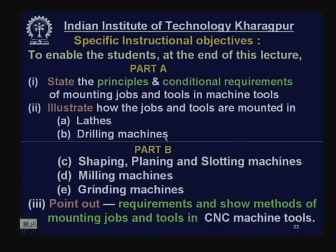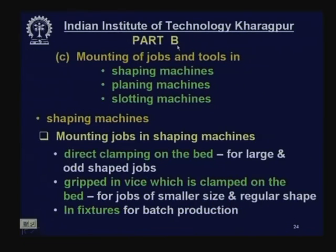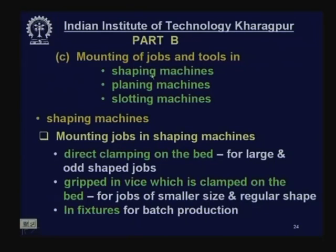Up to the drilling machine we completed in part A. Today we start from the mounting of job and tool in shaping machines, planing machines, slotting machines, then milling machines, grinding machines, and so on. Part B starts with mounting of jobs and tools in reciprocating machine tools — mainly shaping machines, planing machines, and slotting machines. These three machine tools are not very productive; they cannot work at high speed or high rate of production, and the quality of product is also not as good, except that the planing machine is more productive compared to shaping and slotting. Shaping and slotting machines are mainly used for piece production required for maintenance and repair.